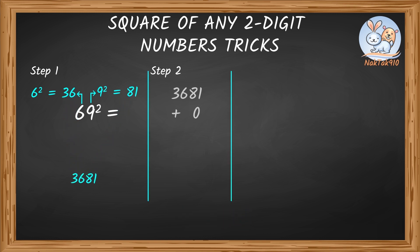Adding the 0 below the last digit. Multiply the two digits of the numbers. 6 times 9 equals 54. Now multiply this product by 2. 54 times 2 is 108. 3681 plus 1080 equals 4761. So the square of 69 is 4761.